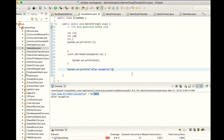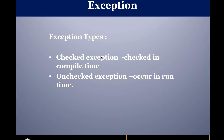Now we will see about exception types. There are two types: checked exception and unchecked exception. Checked exceptions are checked at compile time — the compiler will give you the information that you must handle this exception. In the case of unchecked exceptions, they occur only at runtime. The ArithmeticException we saw earlier falls under the unchecked exception category. Now we will see about checked exceptions.